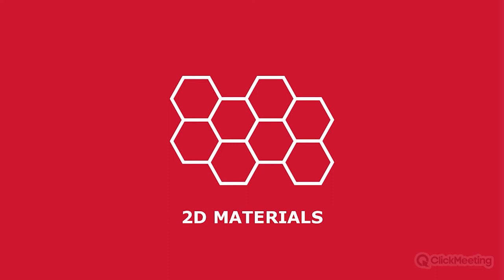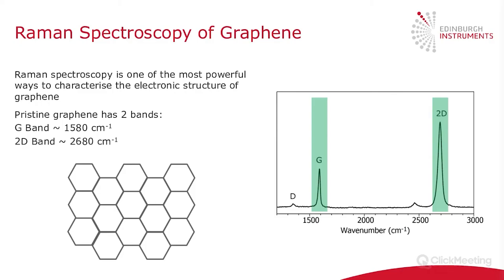Moving to the first application section: 2D materials. The most famous 2D material is graphene, which has excellent electronic, thermal, and structural properties, making it a very promising material for semiconductor and electronic devices. Raman microscopy has established itself as one of the optimum ways to investigate the electronic properties of graphene. In fact, approximately 30% of confocal Raman microscope papers published last year were on graphene — by far the biggest application.